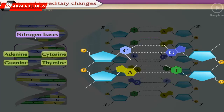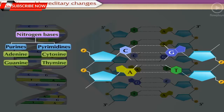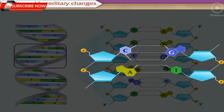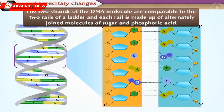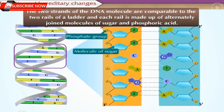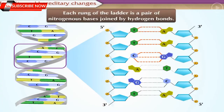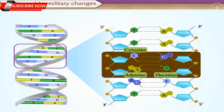These nitrogen bases are grouped into two types: Purines and Pyrimidines. Adenine and Guanine are called Purines, while Cytosine and Thymine are called Pyrimidines. In the structure of a nucleotide, a molecule of a nitrogen base and phosphoric acid are each joined to a molecule of sugar. As there are four types of nitrogen bases, nucleotides are also of four types. The two strands of the DNA molecule are comparable to the two rails of a ladder, each rail made up of alternately joined sugar and phosphoric acid molecules. Each rung of the ladder is a pair of nitrogenous bases joined by hydrogen bonds. Adenine always pairs with Thymine and Cytosine always pairs with Guanine.